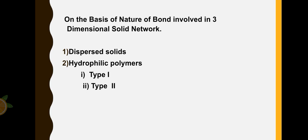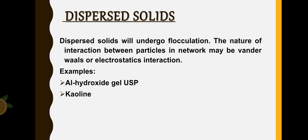Next, classification of gels based on bond that is involved in the three-dimensional solid network. First we have dispersed solids, and second is hydrophilic polymers, type one and type two. This dispersed solid undergoes flocculation. The nature of interaction between particles in the network may be van der Waals or electrostatic interaction, for example aluminum hydroxide gel or kaolin.